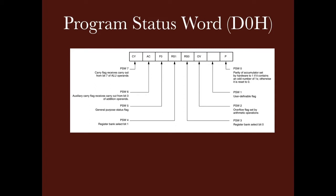The Program Status Word register is located at D0H in RAM. This register is used for flags and register bank selection. The PSW register is 8 bits, but only 6 bits are used. The 2 unused bits can be used as user-defined flags in the program. There are 4 conditional flags that are set or reset based on operations: Carry, Auxiliary Carry, Parity, and Overflow.